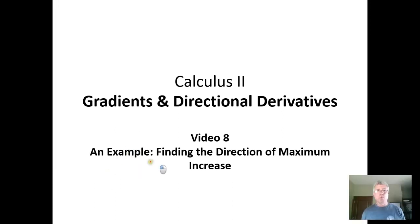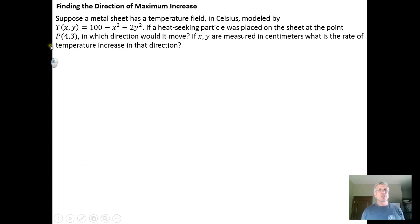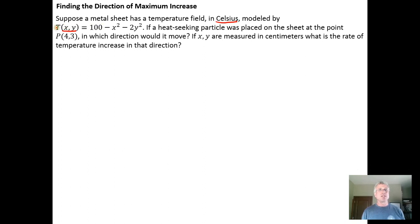In this video we're going to go over a worked example where we find the direction of maximum increase. Here's the problem: suppose we have a metal sheet with a temperature field in Celsius modeled by temperature as a function of position. The xy coordinates give a position on the metal plate and the temperature is described by 100 minus x squared minus 2y squared. If a heat-seeking particle was placed on the sheet at the point (4, 3), in which direction would it move?